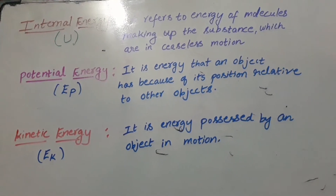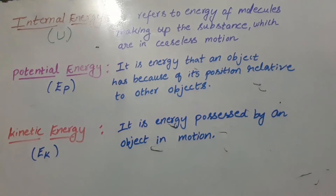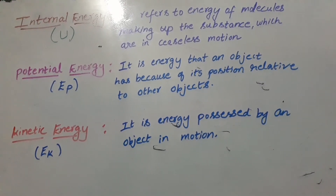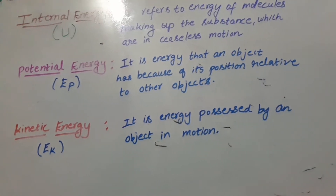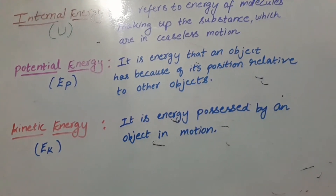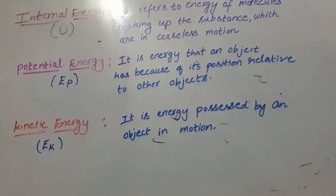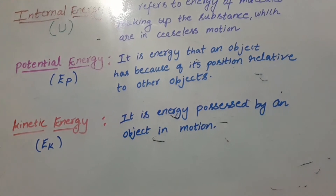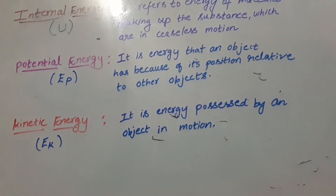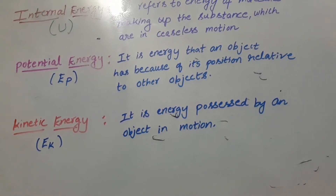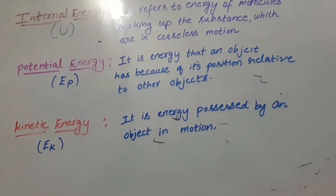The next term is potential energy, represented by the symbol Ep. Based on the position relative to other objects, whatever energy is gained is called potential energy. The next term is kinetic energy, represented by the symbol Ek. It is the energy possessed by an object in motion — based on the motion, we get kinetic energy.